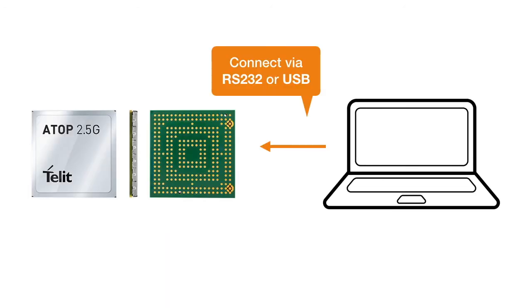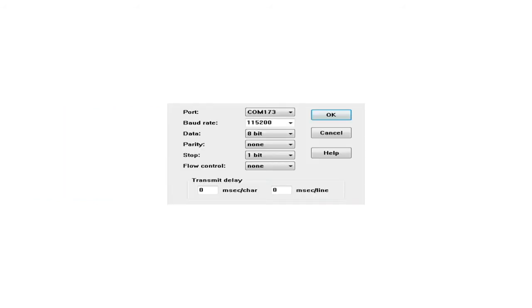The first step is to connect your computer to the device's AT command console using the RS-232 or USB port. Be sure to select the correct COM port on your computer and configure it as shown. Note that your COM port may be different than the one shown in this example.